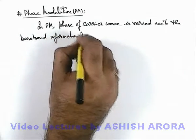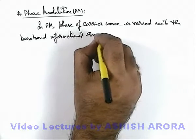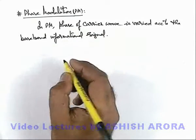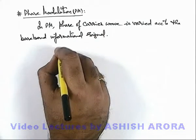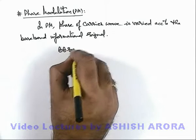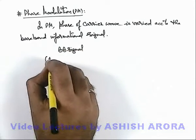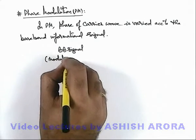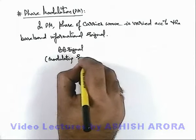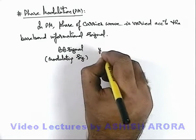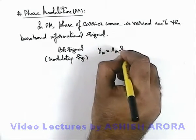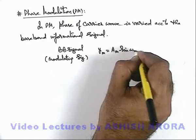Here we can see the baseband signal, which is also called modulating signal, is given as y_m equals A_m sine omega_m t.